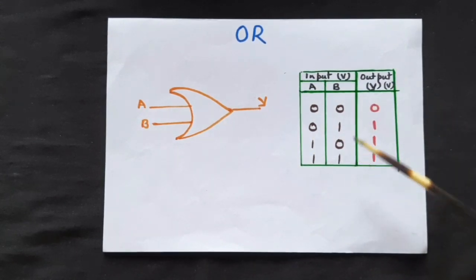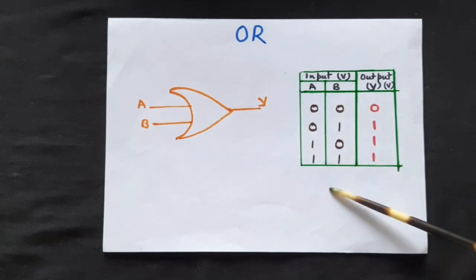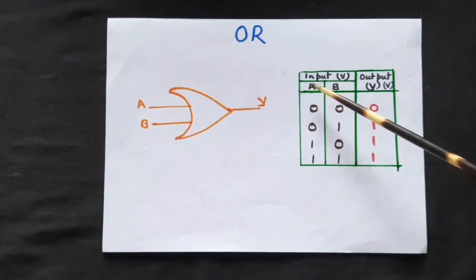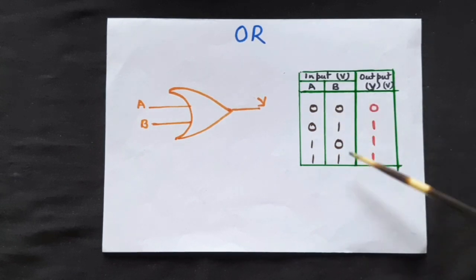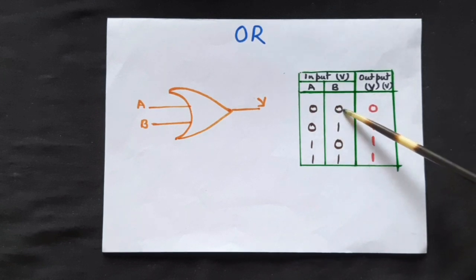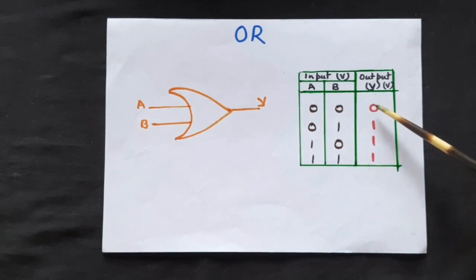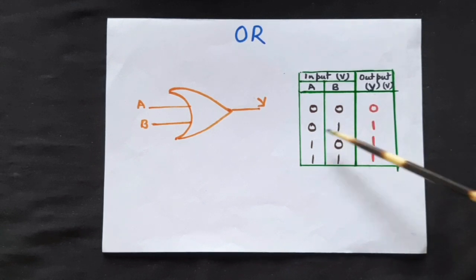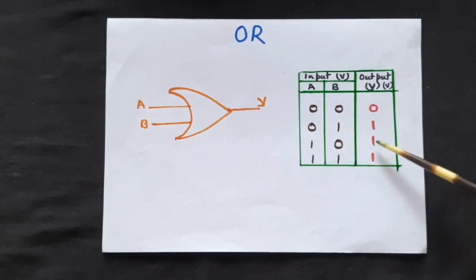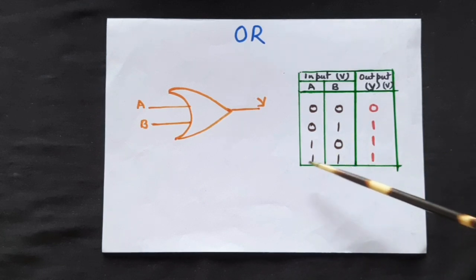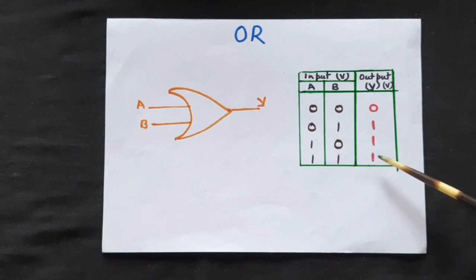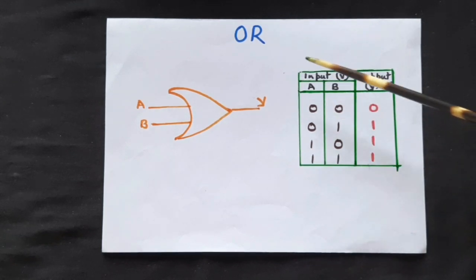Now coming to the truth table, A and B are the two inputs. The various combinations possible for the input are 00, 01, A is 1 and B is 0, or A is 1 and B is 1 — these are the four combinations. When both inputs are low, the output will be low. In the second and third cases, one of the inputs is high, so if A or B is high you get a high output. In the last case, both inputs are high, so the output will definitely be high. This is the truth table for OR gate.